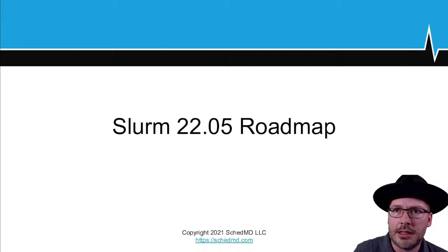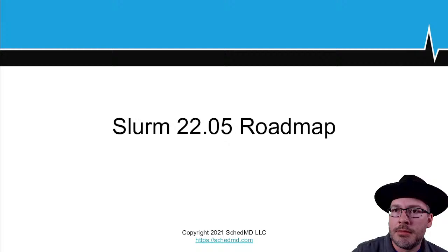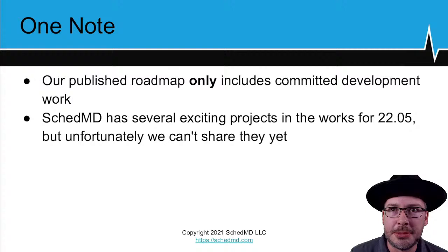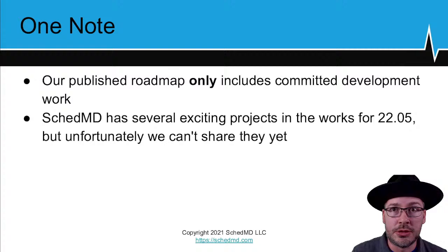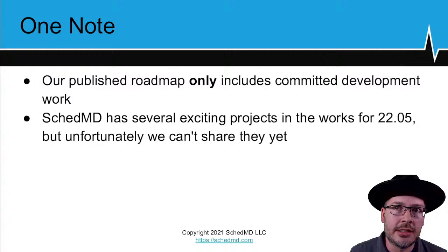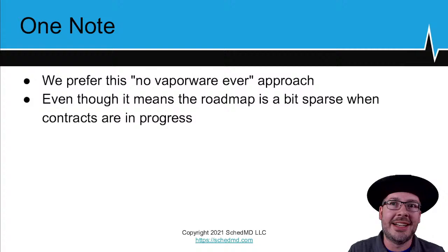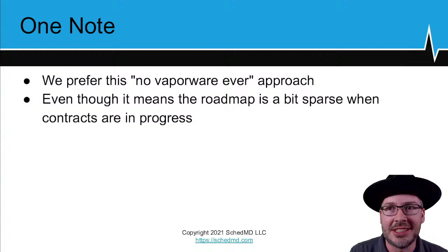That's the end of the 2108 release overview. Moving on to Slurm 2205 — this section is very short at the moment. SchedMD's approach to our public roadmap has always been extremely conservative. The published roadmap only includes work we have 100% committed to. We do have several other projects in the works for 2205 that we can't talk about yet since we haven't locked all the contract details in. We prefer this no-vaporware approach, though the roadmap is short and underwhelming right now — hopefully by November at the Birds of a Feather session there will be more to report.